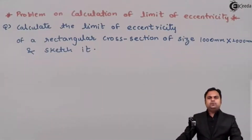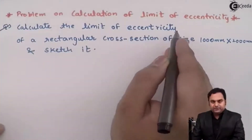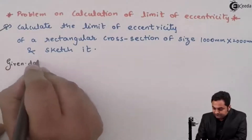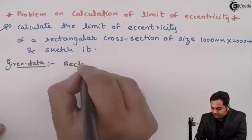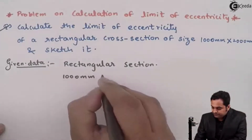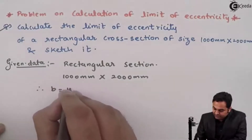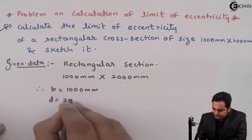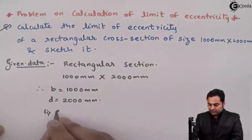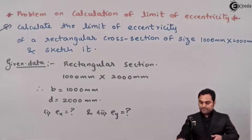In this video we will see a problem on calculation of limit of eccentricity. The question is: calculate the limit of eccentricity of a rectangular cross section of size 1000 mm × 2000 mm and sketch it. We have width as 1000 mm and depth as 2000 mm. We have to calculate eccentricity with respect to X and with respect to Y — that is EX and EY.